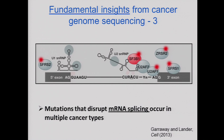In malignancies like myelodysplasia and chronic lymphocytic leukemia, and even in some solid tumors like lung cancer and breast cancer, several of these splicing factors are mutated recurrently. Some of these mutations appear to be gain-of-function events. There is even a drug that has been tested in clinical trials known to affect the spliceosome — the SF3B complex. The idea of targeting the splicing machinery has new life when, before this set of discoveries, there was hardly any rationale for it at all.